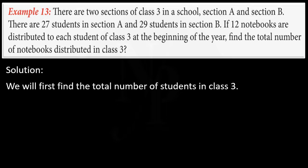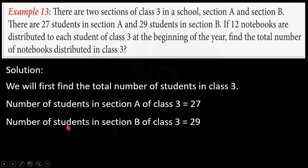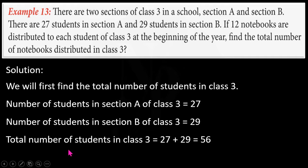Solution: we first find the total number of students in class 3 by adding the number of students in section A and section B. Number of students in section A is 27, number of students in section B is 29. Total number of students in class 3 is equal to 27 plus 29, which equals 56.